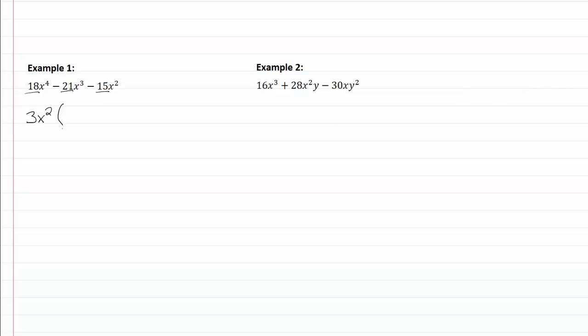So I'm going to pull out 3x² by taking 18 divided by 3, which would give me 6. x⁴ divided by x² will give me x².